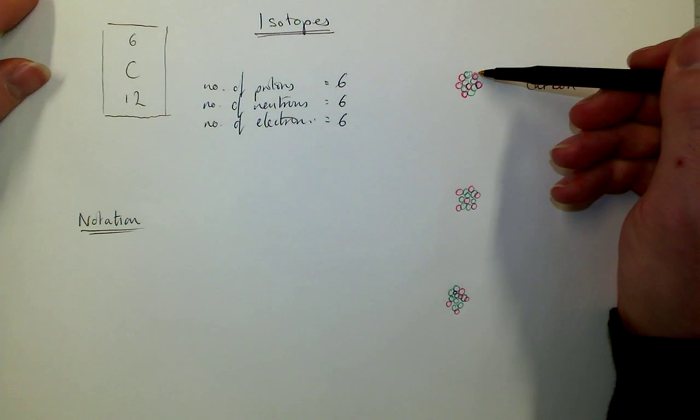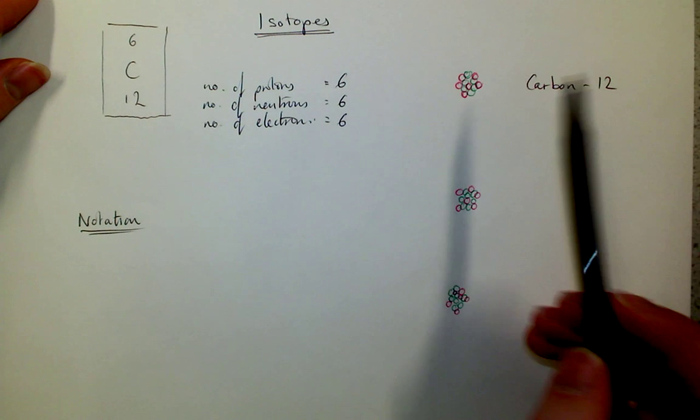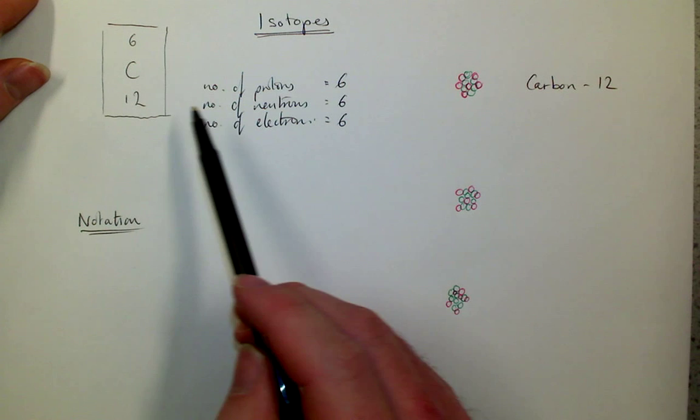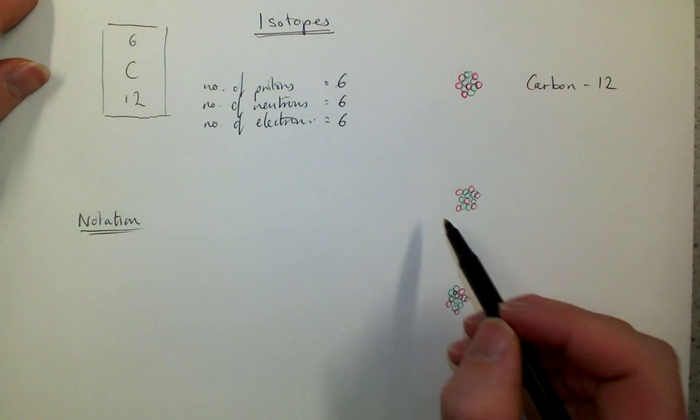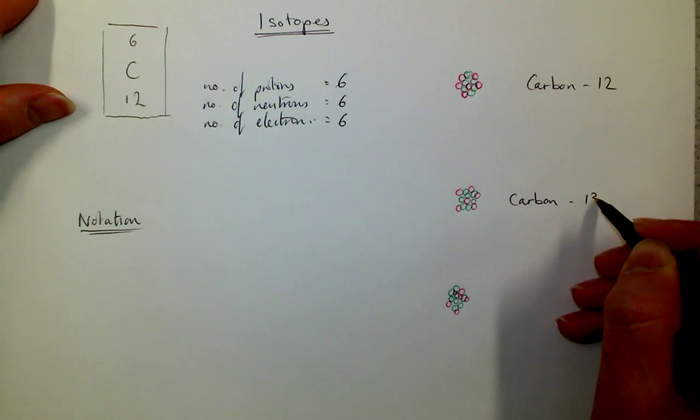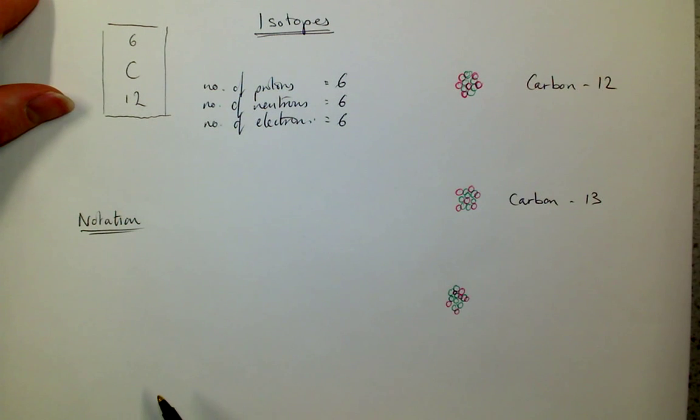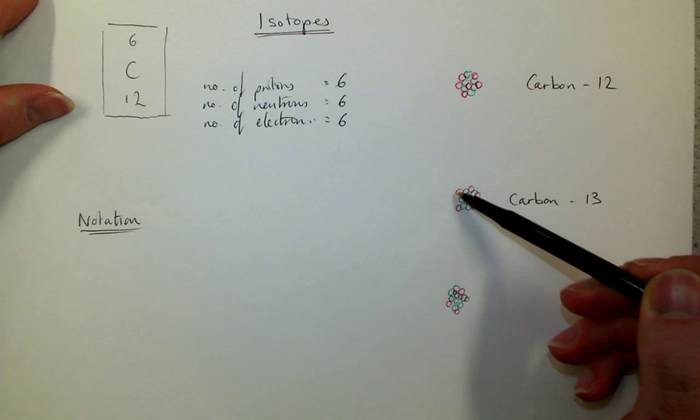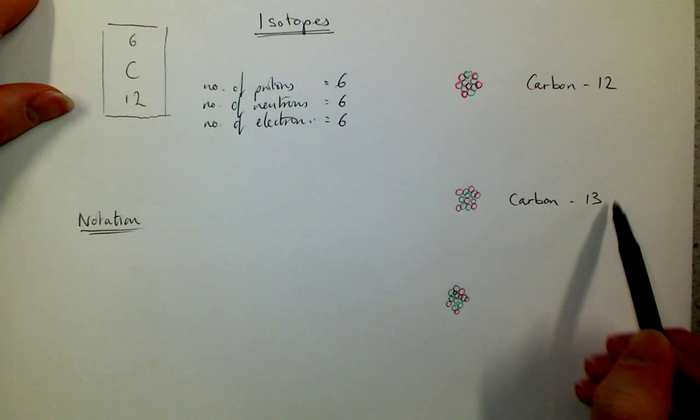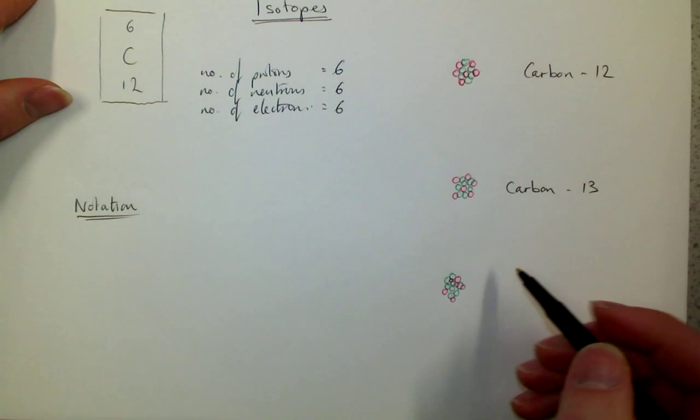Where you've got one, two, three, four, five, six protons, six neutrons as well. But actually, there exists some carbon-13. So how many neutrons are in carbon-13? Well, there must be six protons, otherwise it wouldn't be carbon. So there must be seven neutrons.